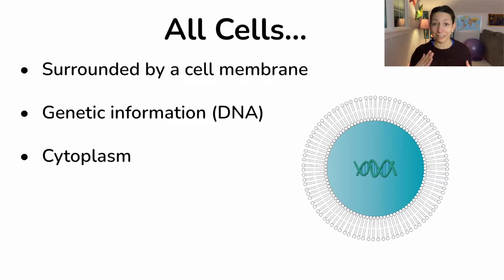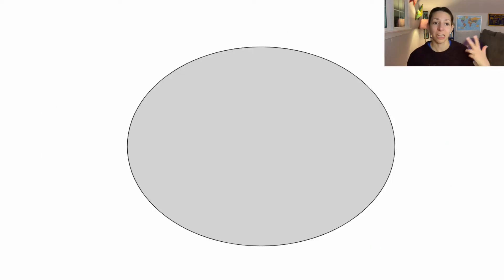Remember, all cells, no matter which type, are going to be surrounded by a cell membrane. They're also going to have genetic information, DNA, and cytoplasm, that gel-like substance where all the components of the cell sit. But the membrane is really crucial for containing all the important materials of the cell.